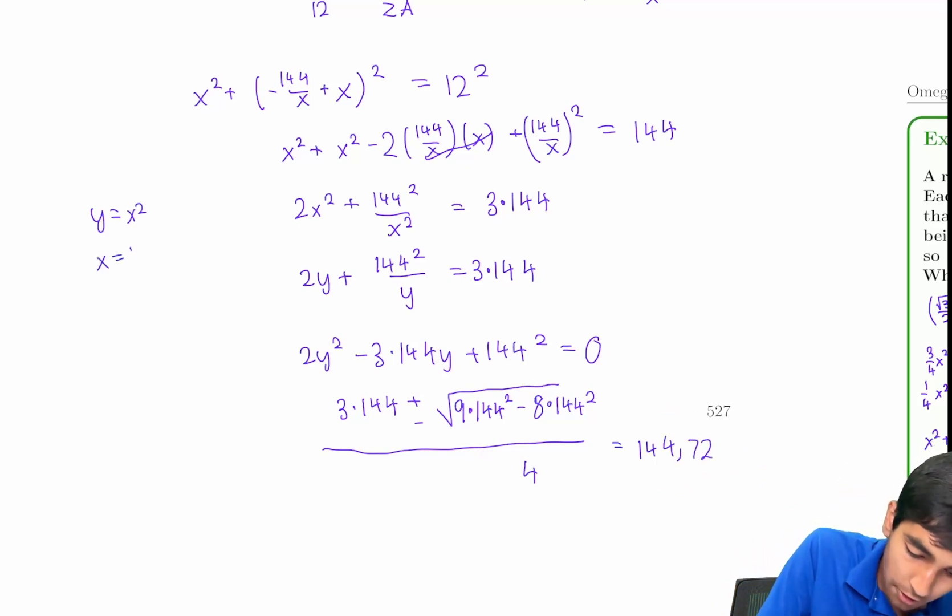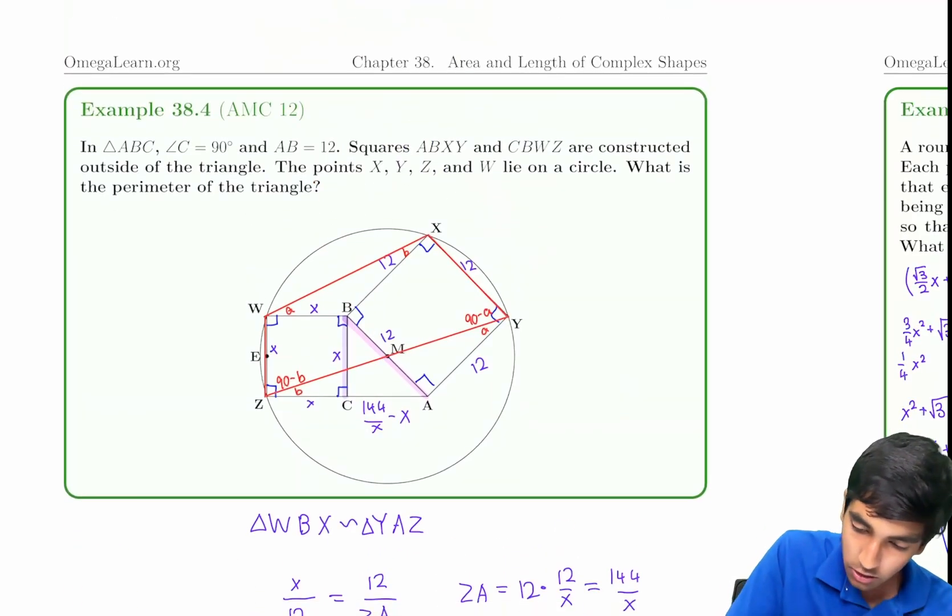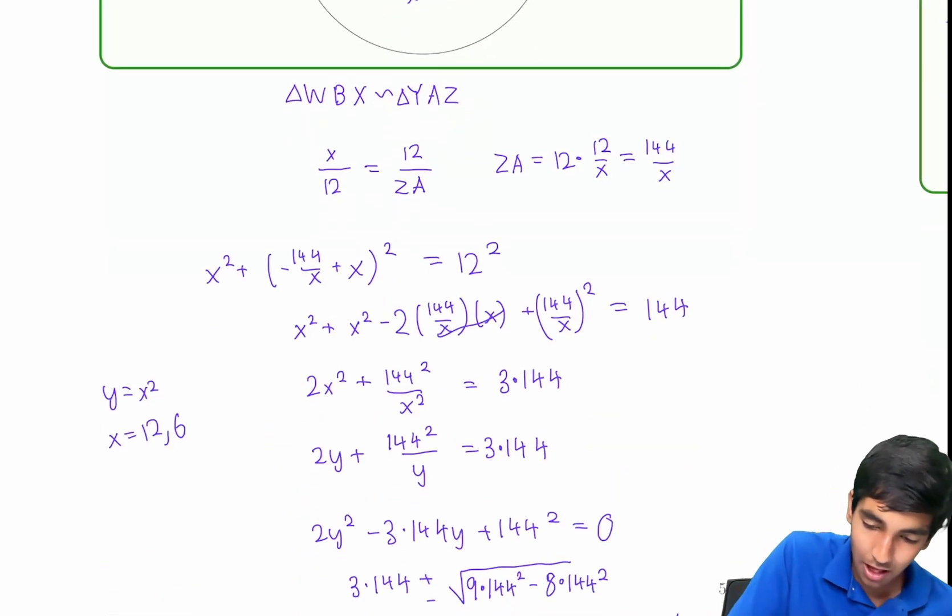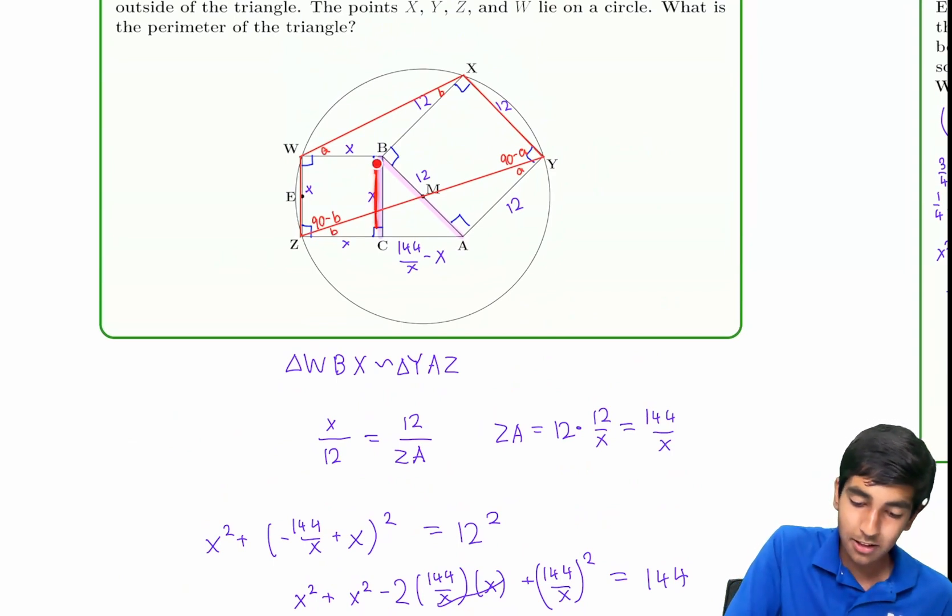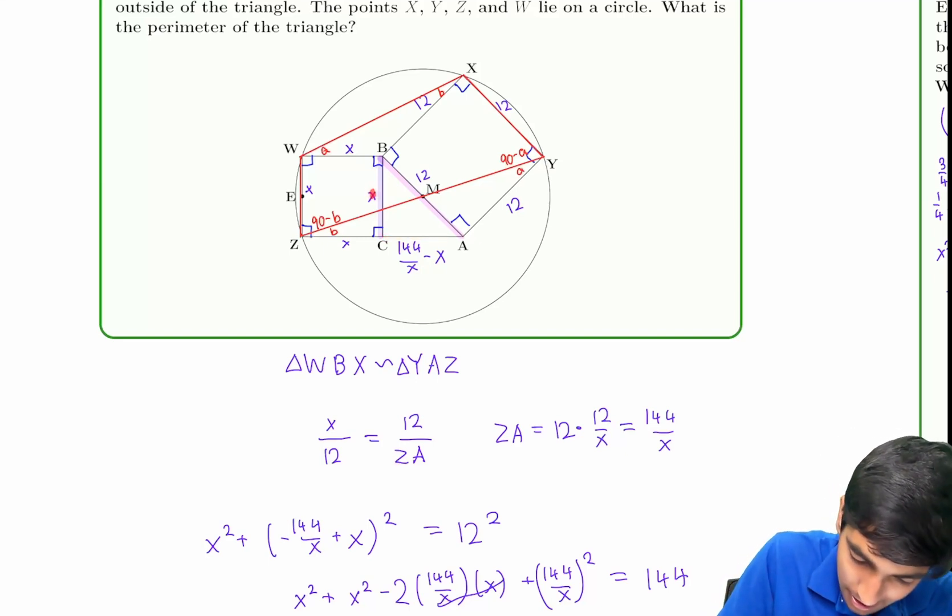What happens if it's this, which is just 144 and 72. These are two possible values for Y. That means X can either be 12 or 6 root 2. Is it possible for X to be 12? No. The leg of a right triangle, that would make this thing 0. So X is 6 root 2. And if X is 6 root 2, then this side length CA is also 6 root 2. So our answer is just 12 plus 12 root 2.